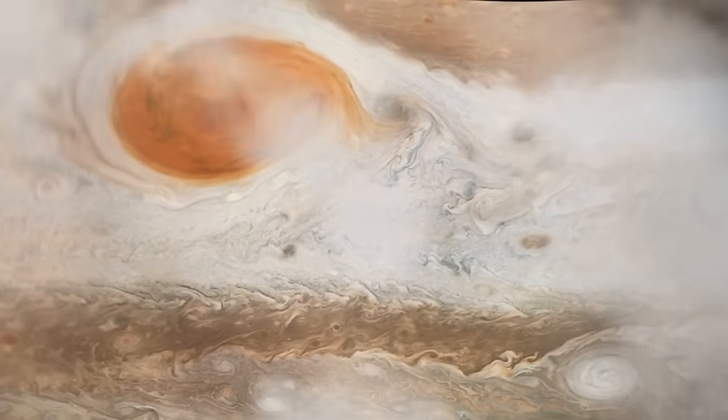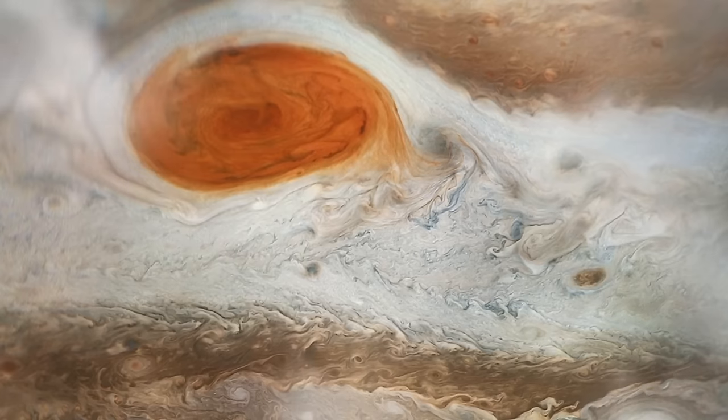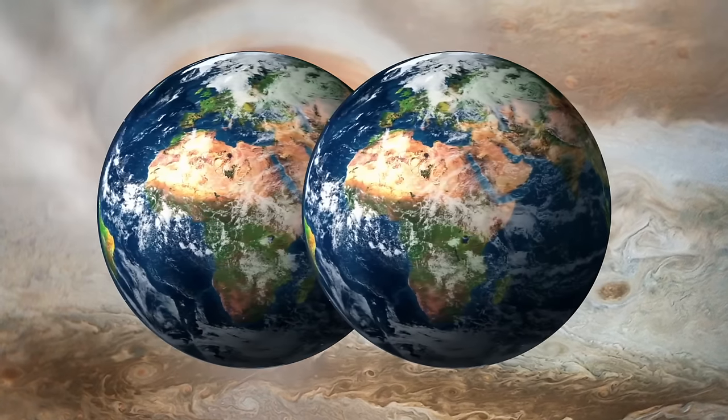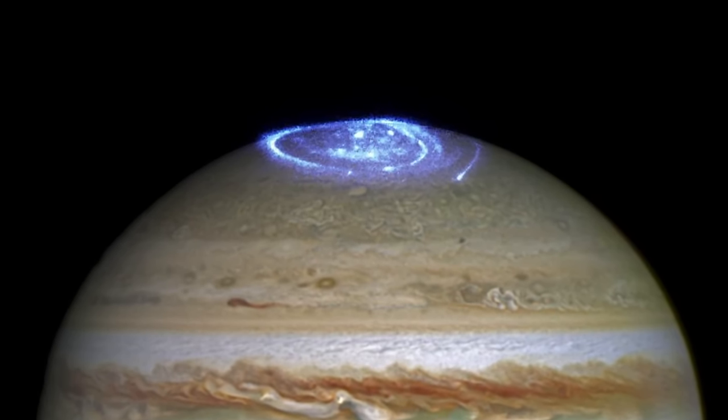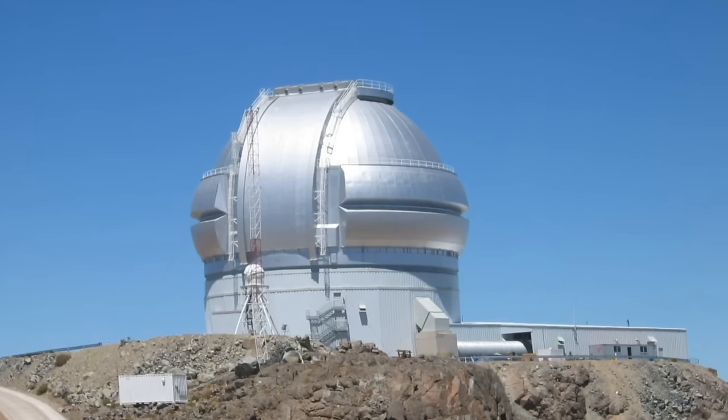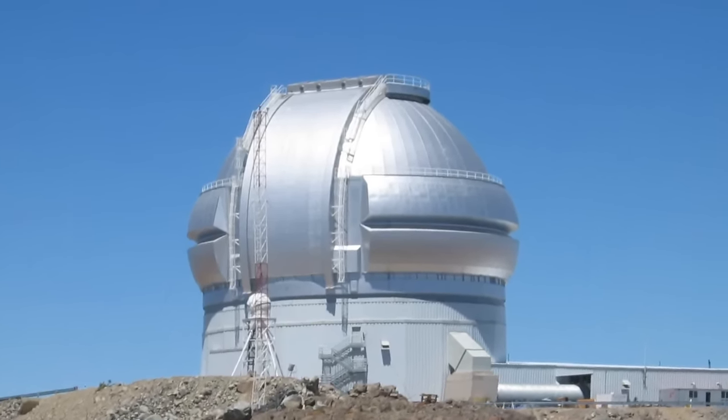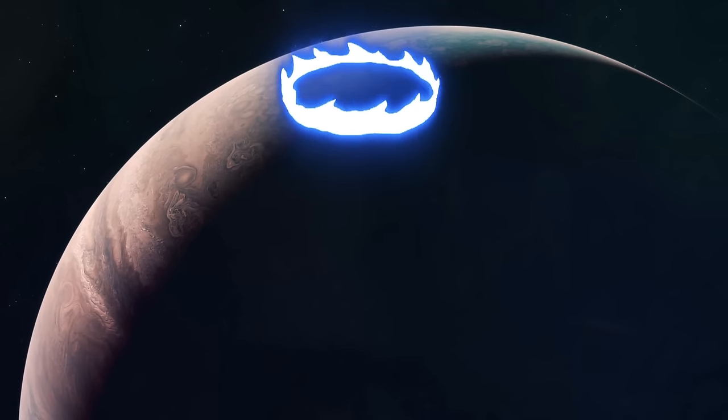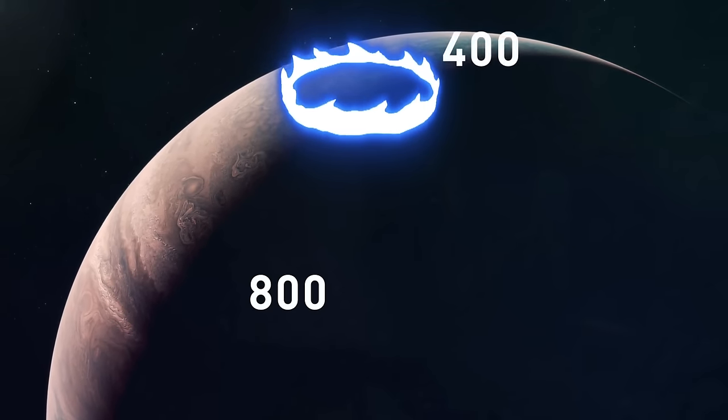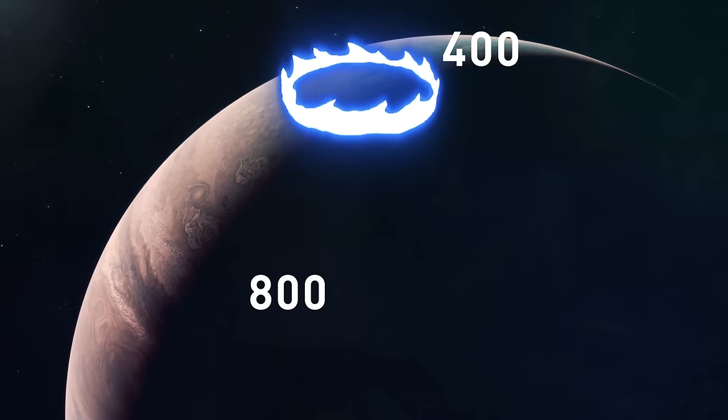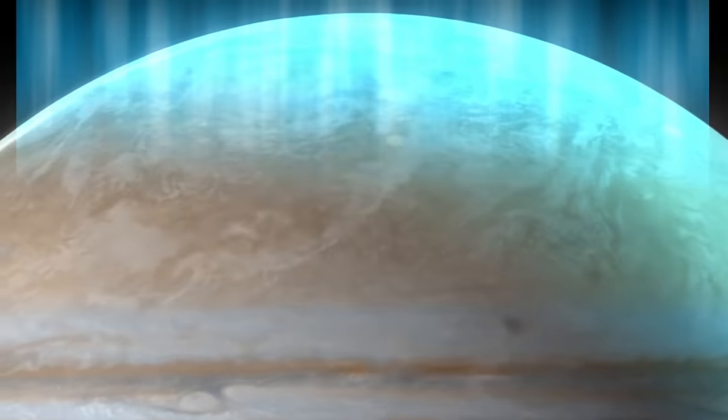Jupiter's most famous feature is the Great Red Spot, a giant storm raging in the atmosphere of the planet and capable of engulfing two Earths. But few people know about the Great Cold Spot. It was spotted only recently, when astronomers were checking data received by an observatory in Chile. It's believed that Jupiter's auroras spawn this unusual patch, which is around 400 degrees Fahrenheit colder than the surrounding areas.